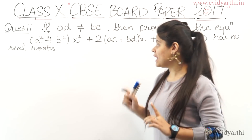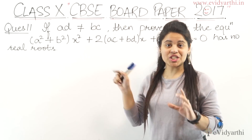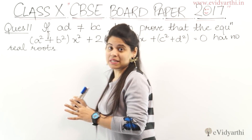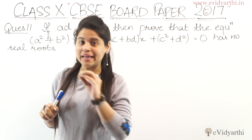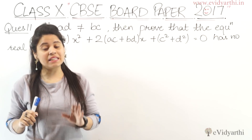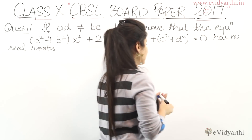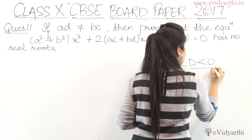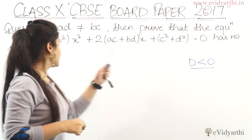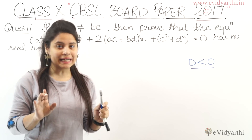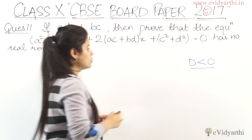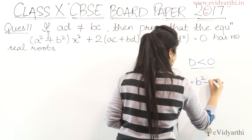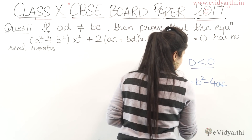Here we have to prove that the equation has no real root. If there is no real root, then we know that the discriminant should be less than 0. If we have proved that the discriminant is less than 0, we can prove that the equation has no real root. The formula for the discriminant is B² − 4AC.